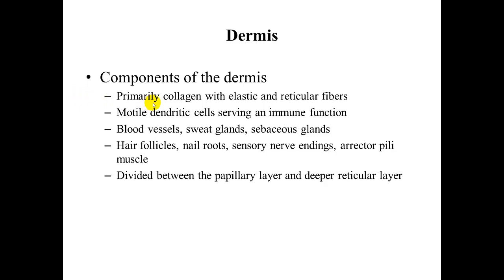The dermis is primarily made of collagen, with some elastic and reticular fibers as well. These are there to provide strength and elasticity to the tissue. We also have modal dendritic cells that serve an immune function in protection from foreign pathogens. We also have blood vessels, sweat glands, and sebaceous glands.